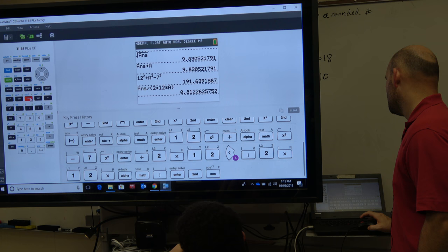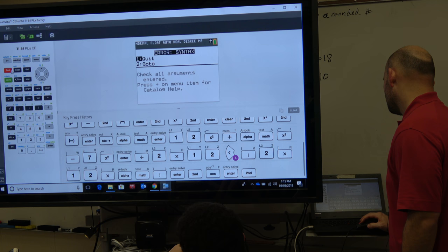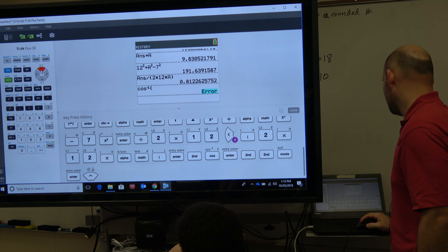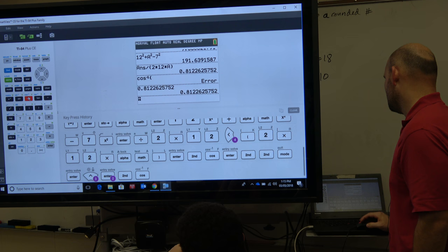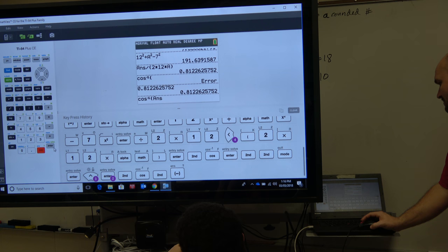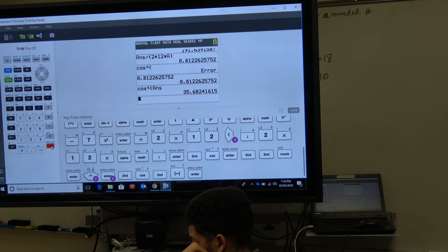Uh-oh, what did I type? Oh, I forgot to hit the second answer. There's my answer, second cosine, second answer. So what that does is take the cosine inverse of your last answer, which is 35.68. So C equals 35.682.